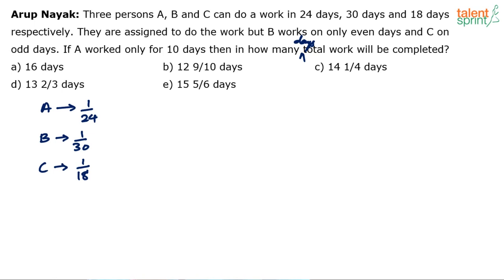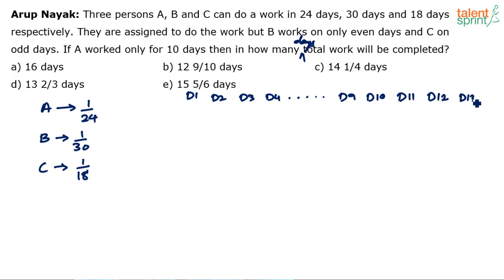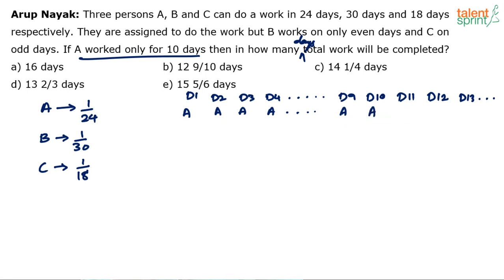If you look at the day pattern — D1, D2, D3, D4... up to D9, D10, then D11, D12, D13 and so on — on the first day, A works all days but only for the first 10 days. From the 11th day onwards, A is not in the picture. B works only on even days and C works only on odd days.